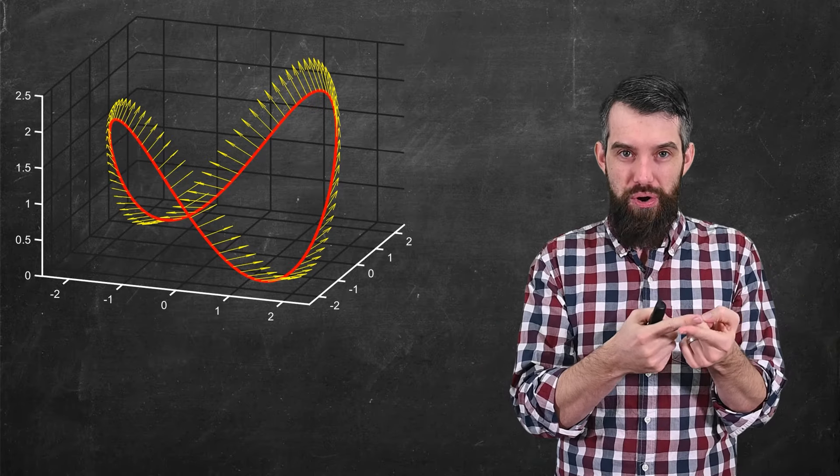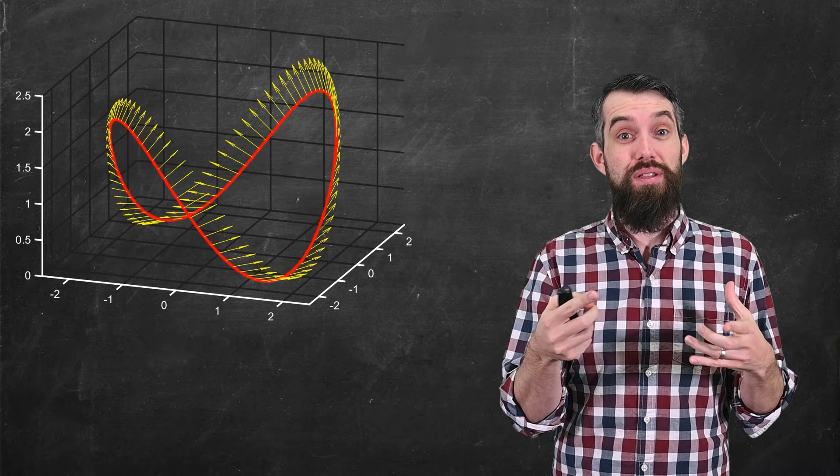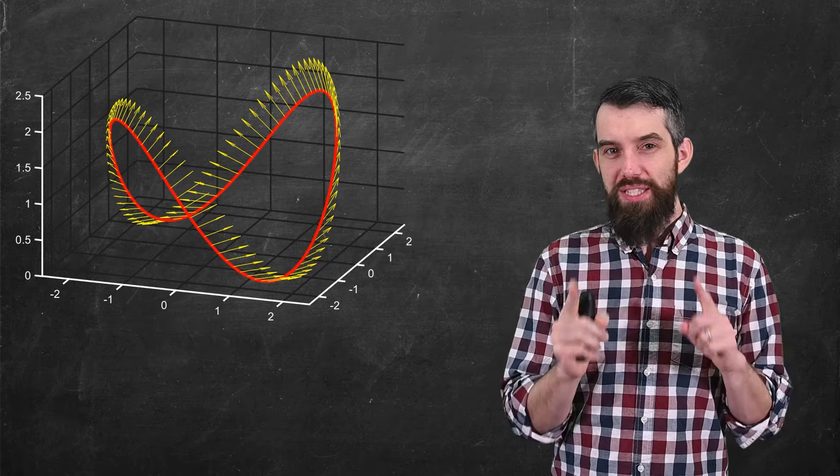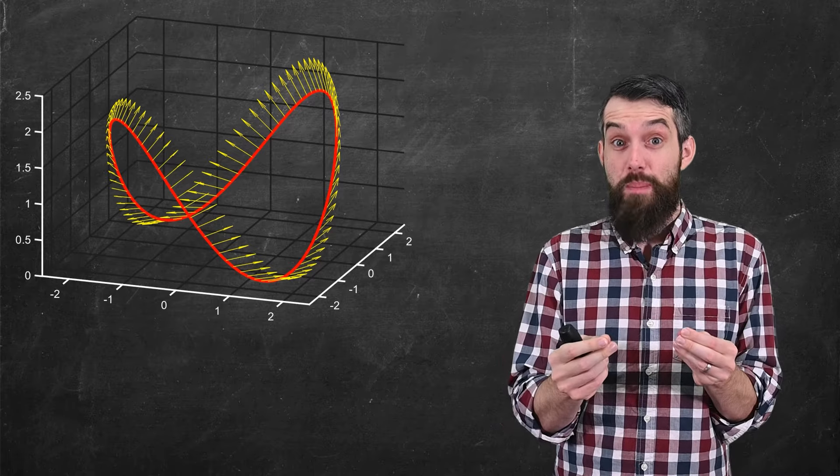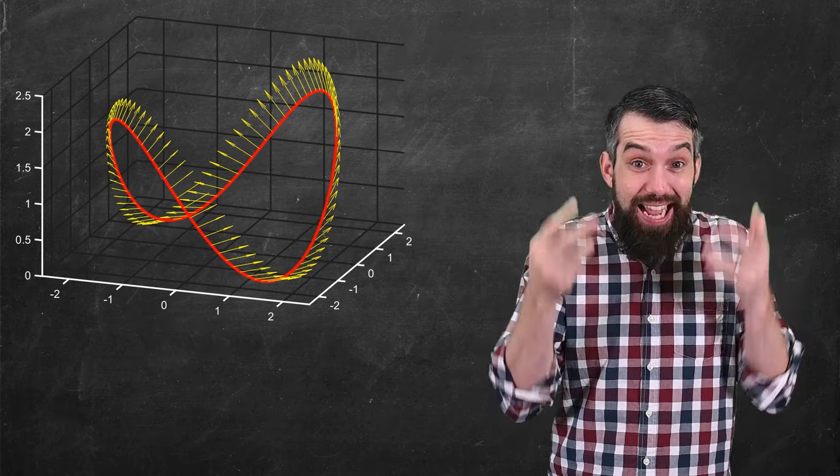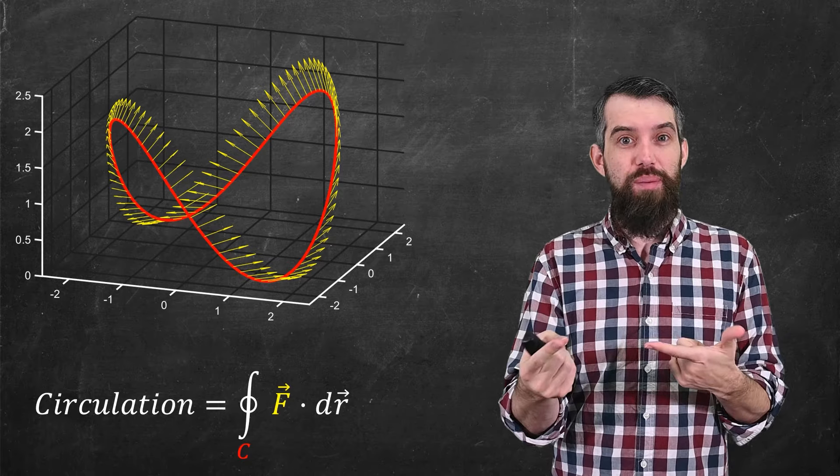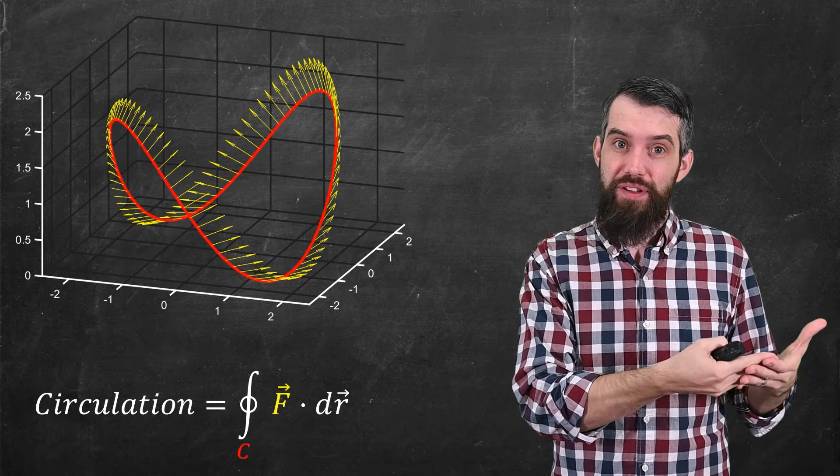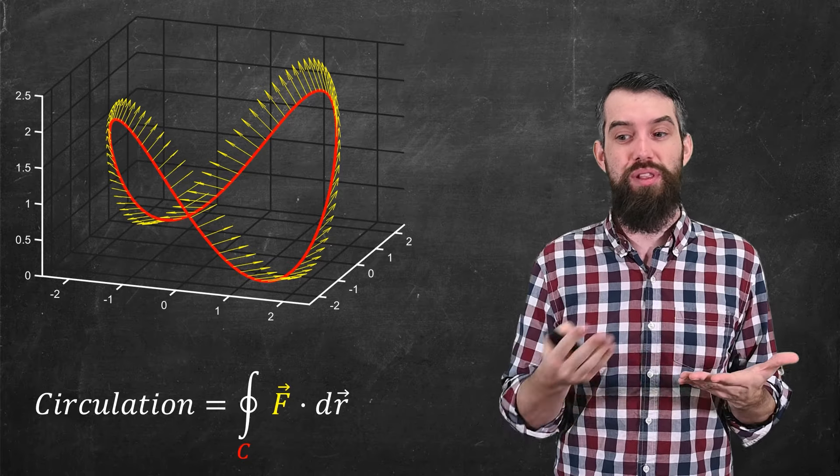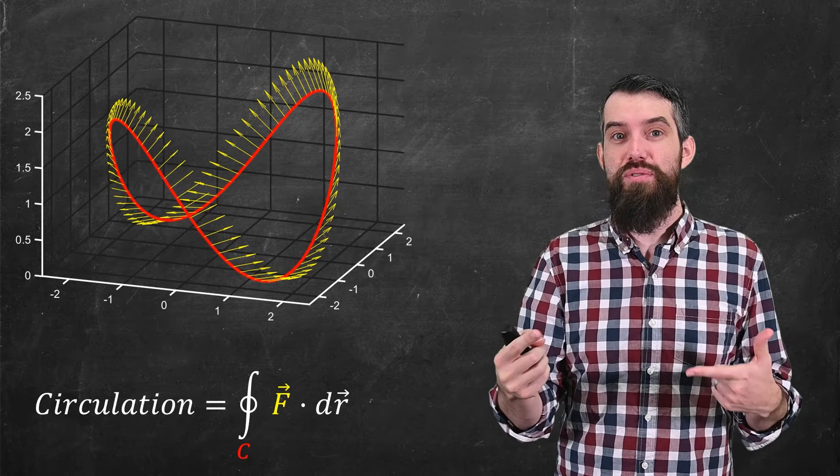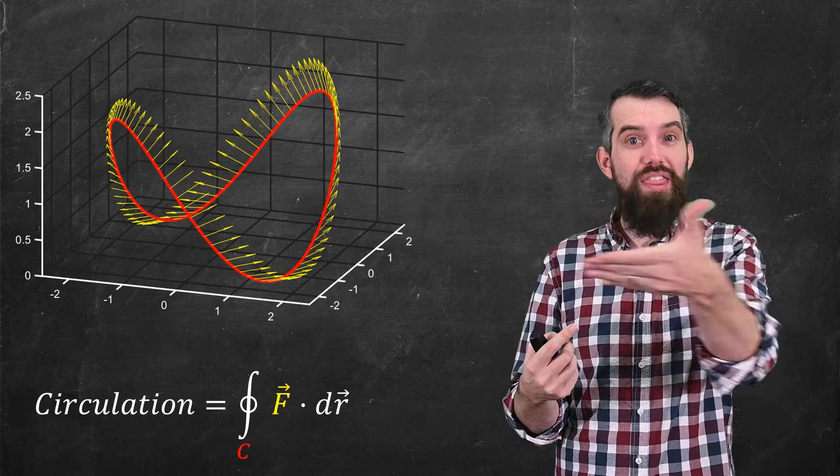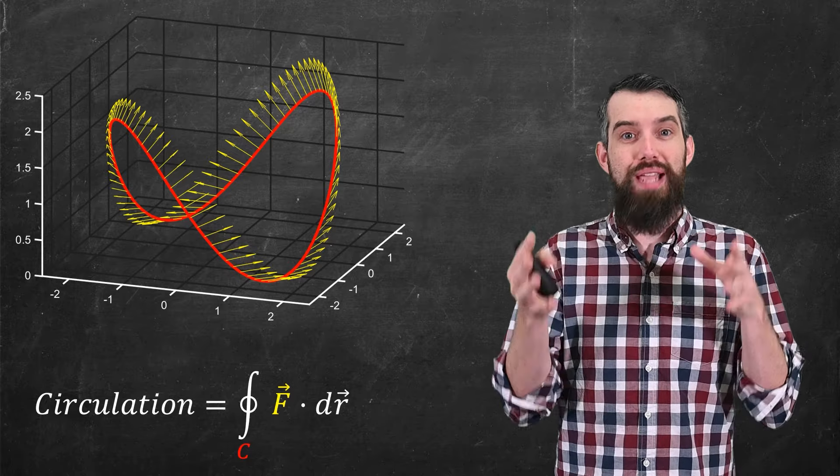It might help our visualization to only draw the vectors that actually start from the surface, just to make it a bit cleaner. And I'm going to go even one step further and now only draw the boundary curve and the vectors that start on the boundary curve. Now the reason why I'm focusing just on the boundary here is that we know something about boundaries. We have the property of the circulation along the boundary by this vector field f.